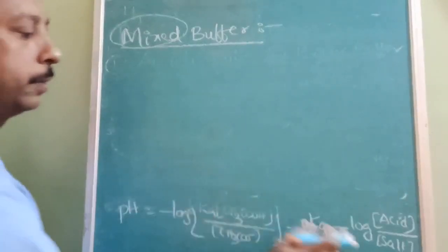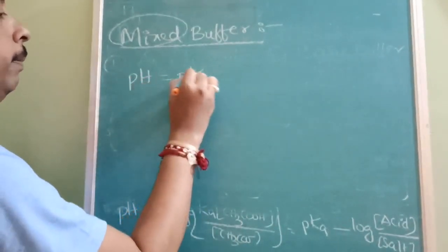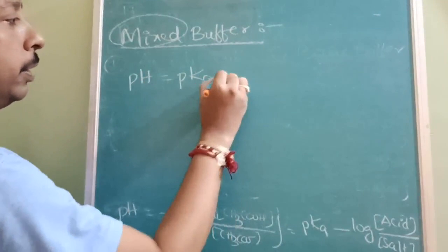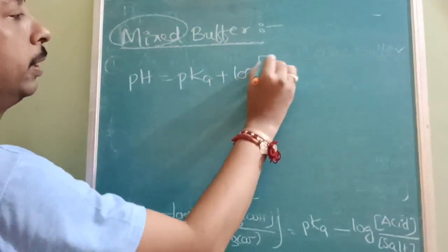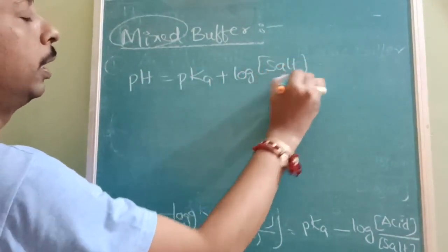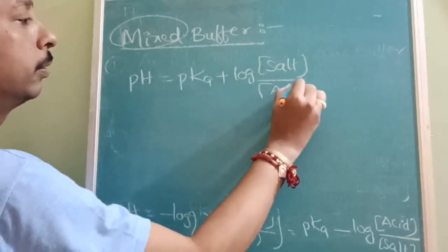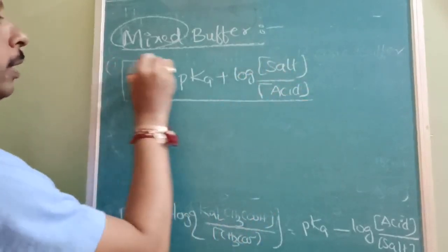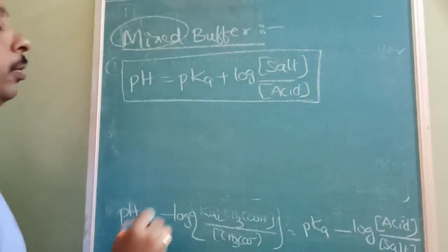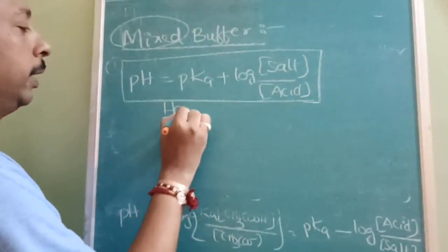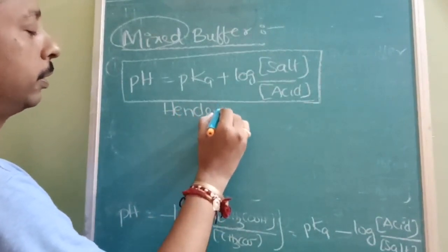To keep this positive, we write pH = pKA + log([salt]/[acid]). This is the final formula we get — and this is called the Henderson-Hasselbalch equation. Henderson equation is used to find out the pH of a buffer.